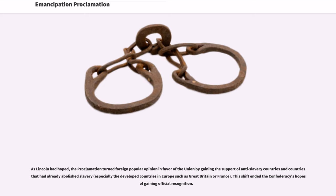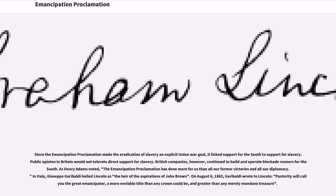As Lincoln had hoped, the proclamation turned foreign popular opinion in favor of the Union by gaining the support of anti-slavery countries and countries that had already abolished slavery, especially the developed countries in Europe such as Great Britain and France. This shift ended the Confederacy's hopes of gaining official recognition. Since the Emancipation Proclamation made the eradication of slavery an explicit Union war goal, it linked support for the South to support for slavery. Public opinion in Britain would not tolerate direct support for slavery. British companies, however, continued to build and operate blockade runners for the South.